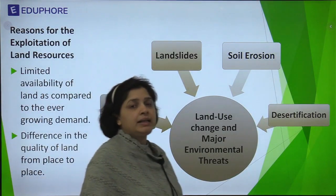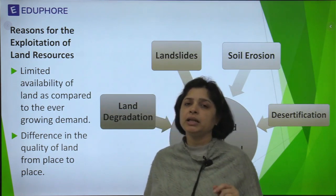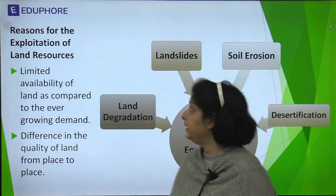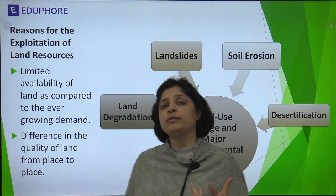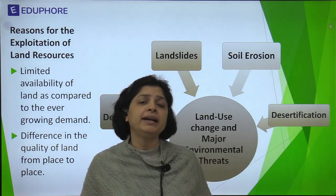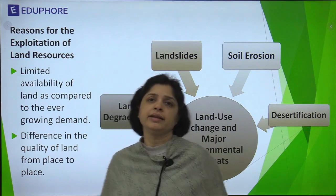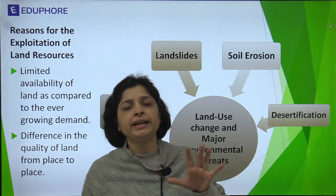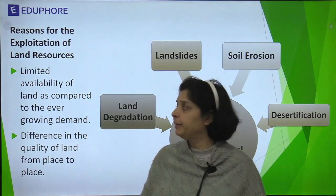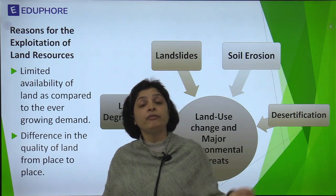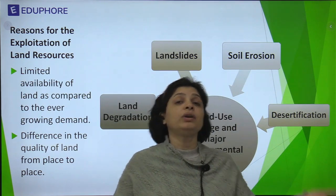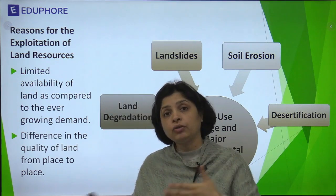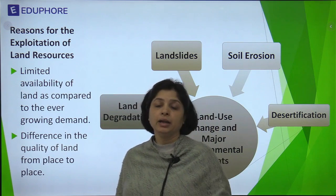Today, land resources are greatly exploited and severely degraded. The reason for this exploitation is the limited availability of land — only about 30% of Earth's surface is continental land, and the demand for it is ever-increasing. Whether for agricultural purposes, grazing and pastures, or setting up industries, the demand is very high because of ever-increasing population. Additionally, land quality is variable — some land is of such poor quality it cannot be used for agriculture, and some rocks beneath are so weak that no big structures can be built on them.